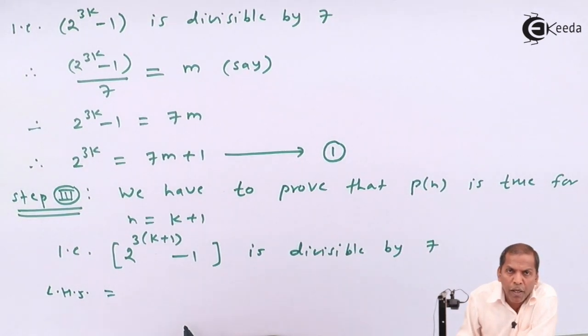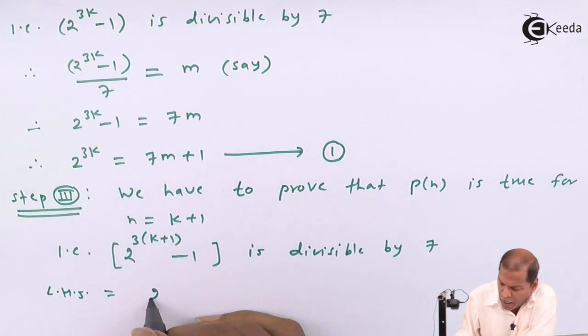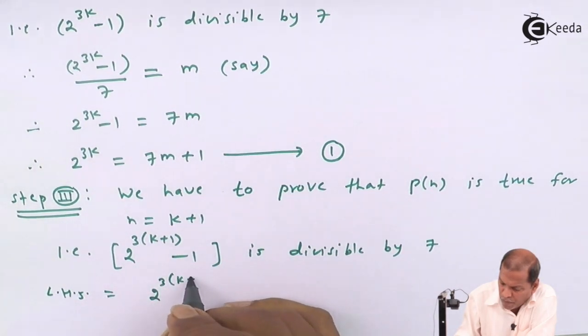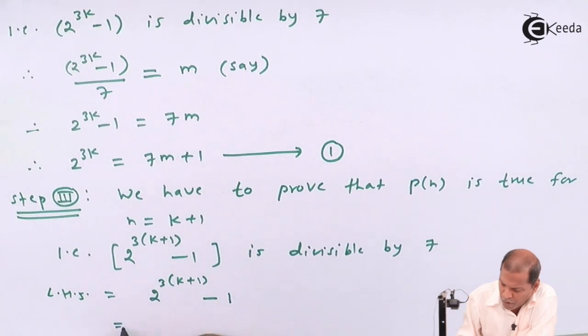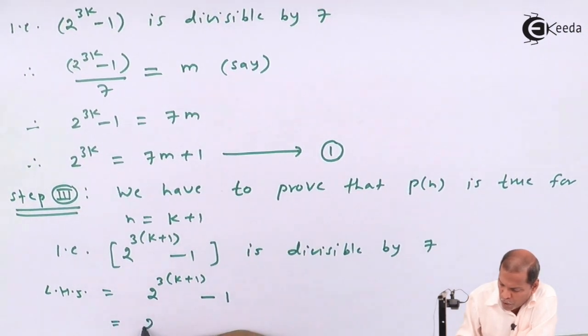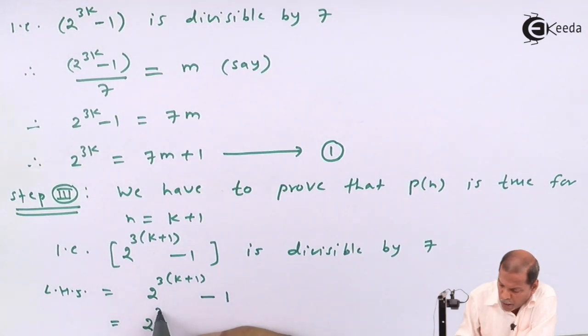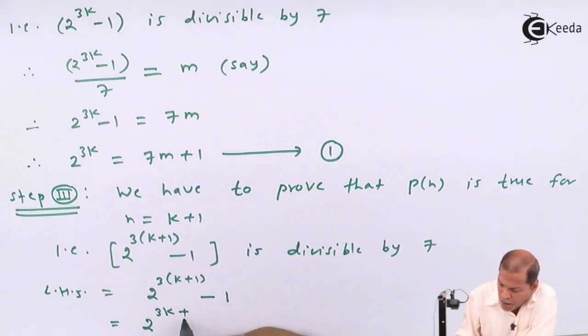Now we consider the left hand side. That is 2 raised to 3(k plus 1) minus 1. So that gives us 2 raised to 3 multiplied by k gives us 3k plus 3 into 1 is 3.